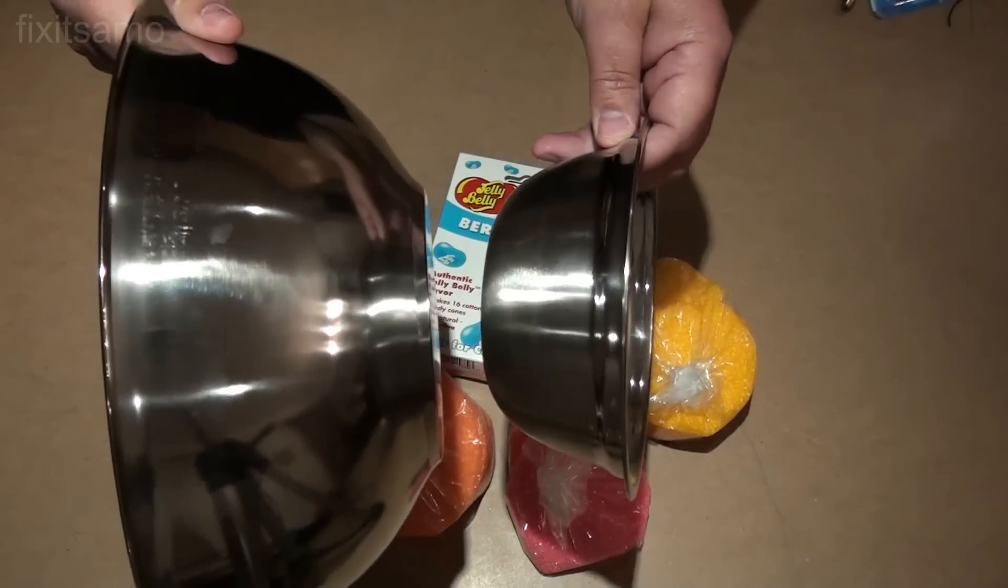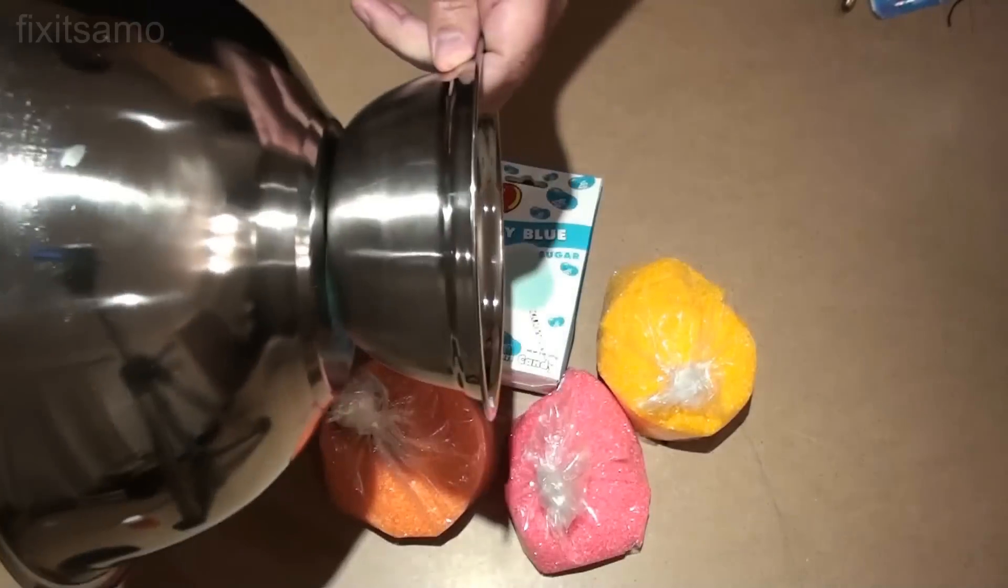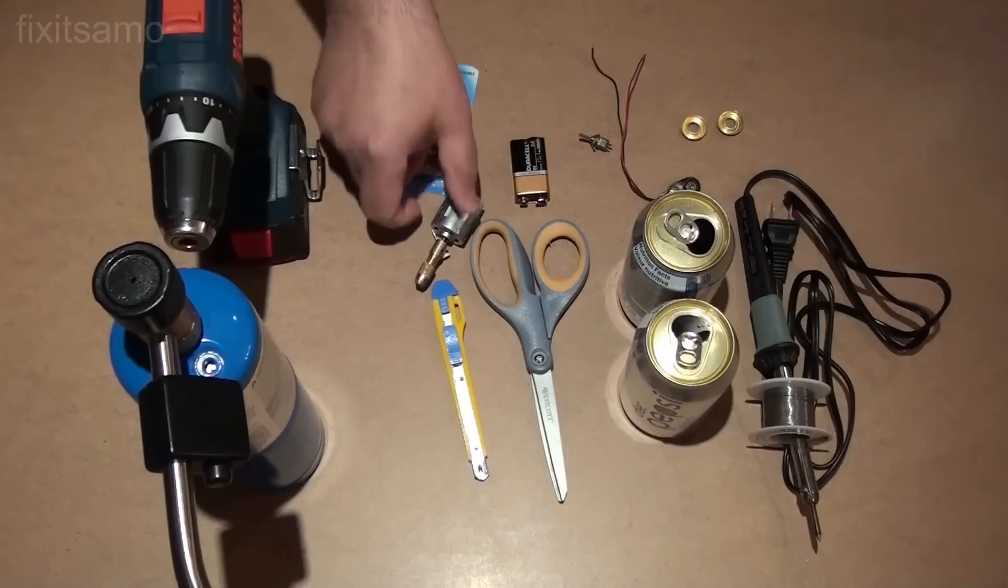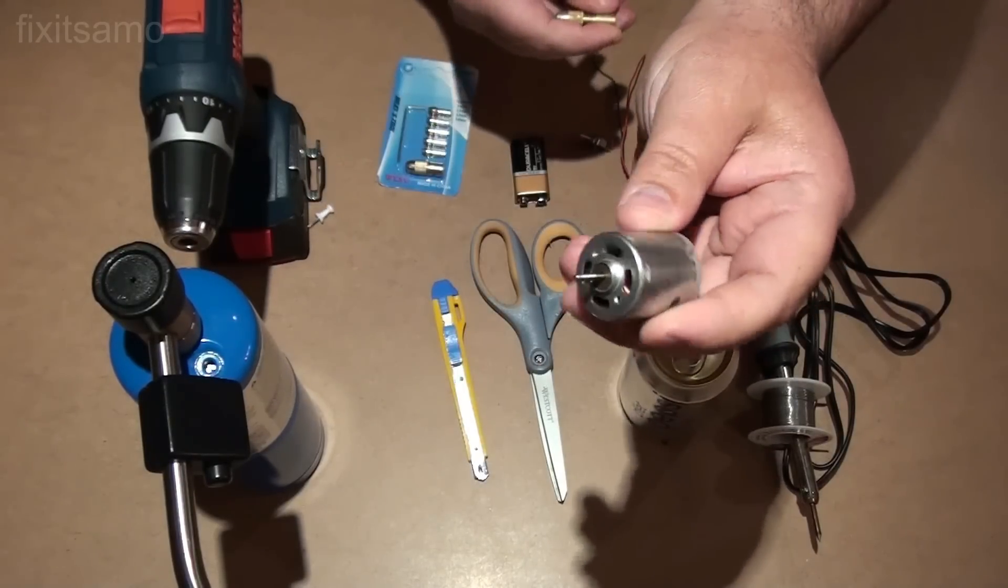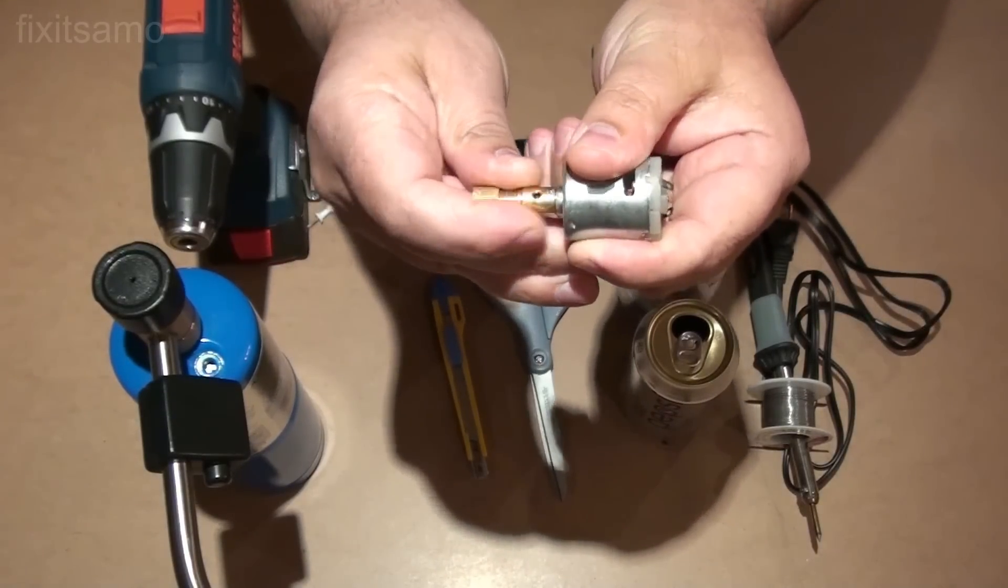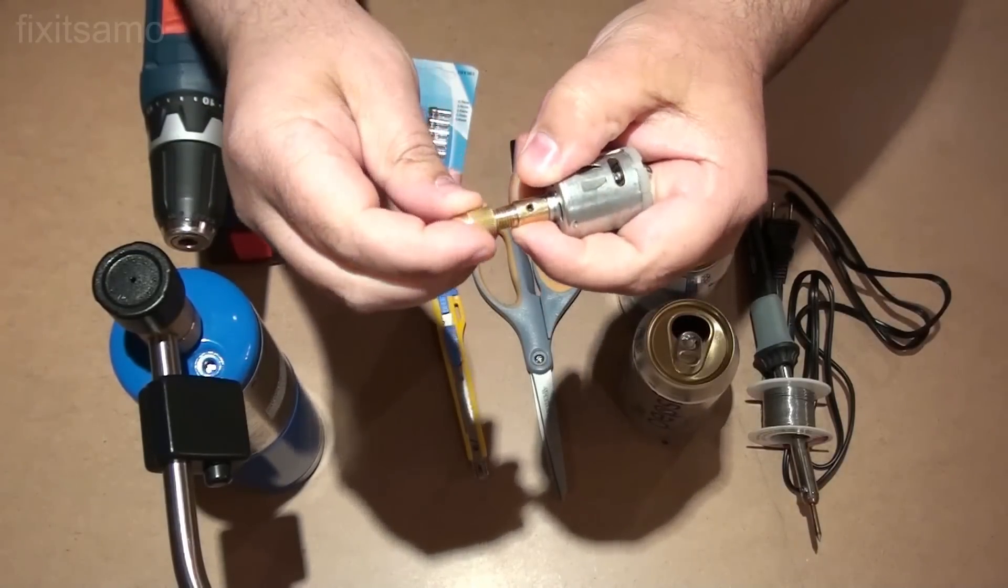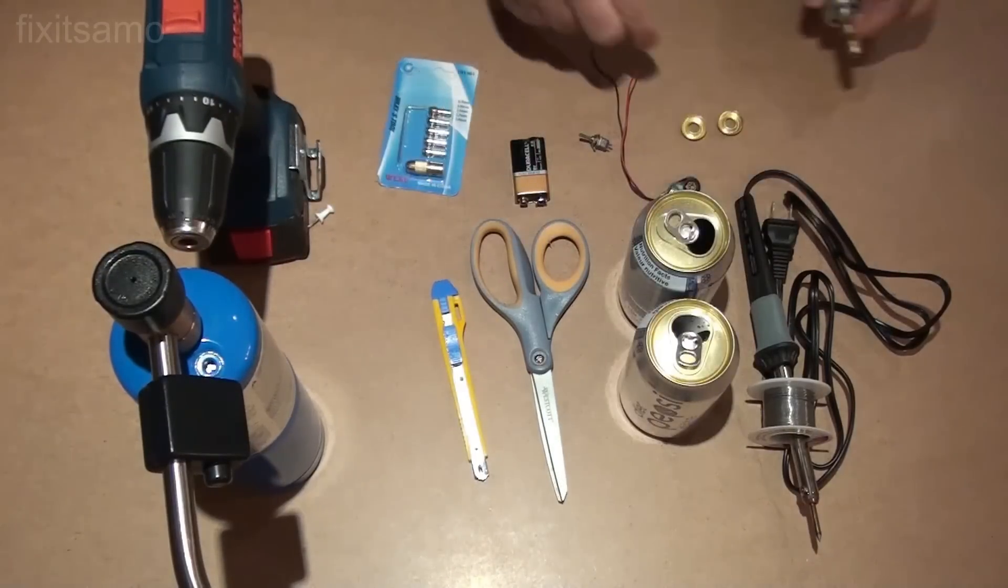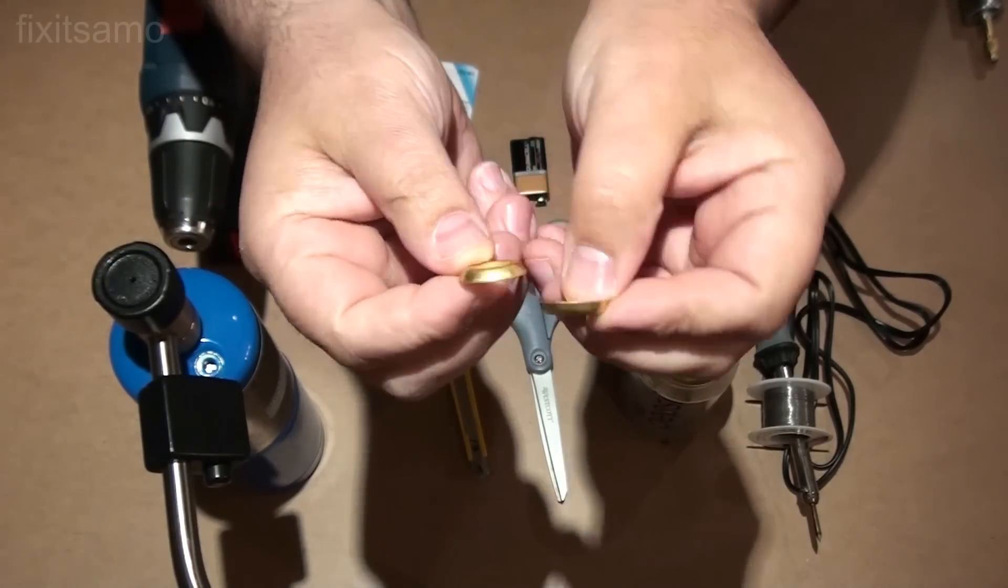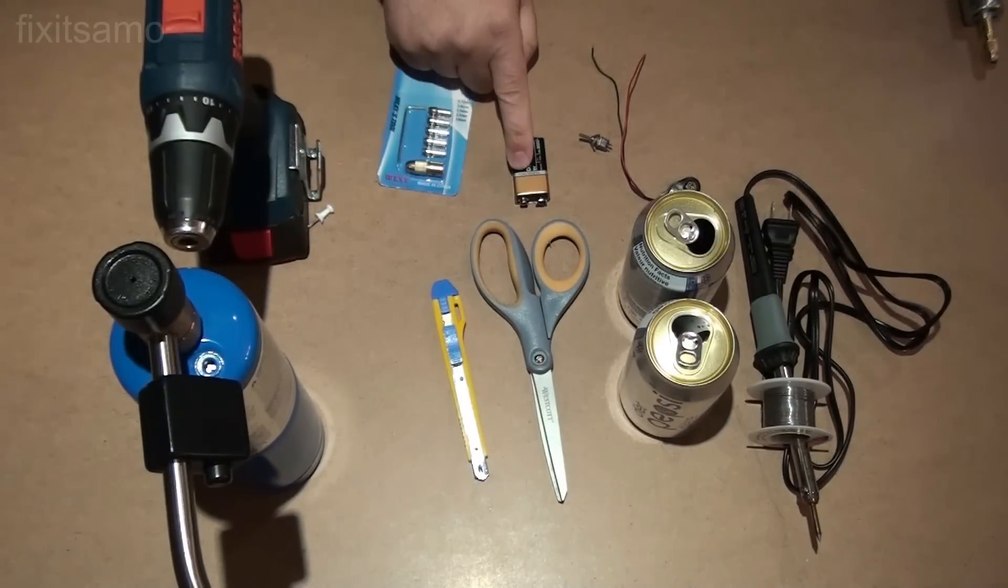For this project we need two salad bowls like this so they can go into each other. We're gonna need a torch, drill, a 9-volt motor like this one and a chuck set that fits in here and you lock it with two screws. We're gonna need two washers, 9-volt battery.